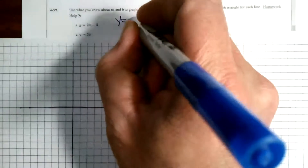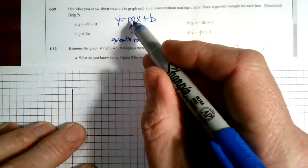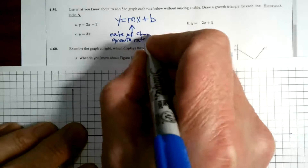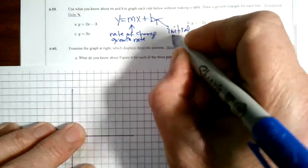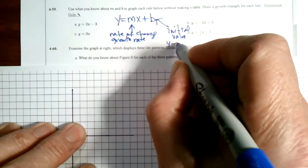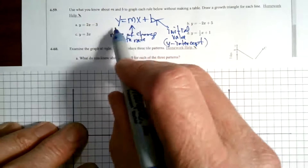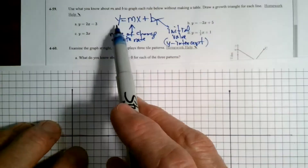Before I begin, I want to make sure we review the rule and its components. Y equals MX plus B. We know that M is that growth rate — it's the rate of change. B represents the initial value, or we also refer to it as the Y-intercept. The Y and the X are the actual pieces that stay within the equation because what we're comparing is Y to X, and we're coming up with all the solutions that make it work.